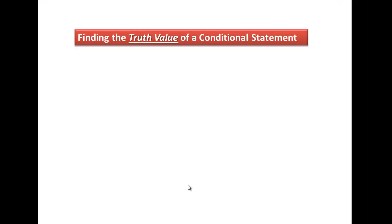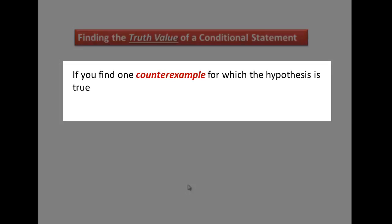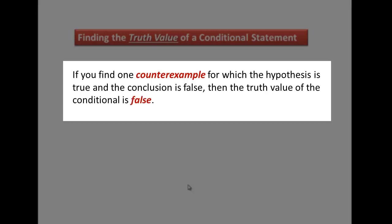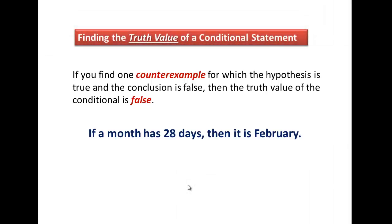Now let's talk about finding the truth value of a conditional statement. We need to analyze every conditional statement and see if it is true or false. If you find one counterexample for which the hypothesis is true and the conclusion is false, then the truth value of the conditional is false. Let's take a look at an example: if a month has 28 days, then it is February.